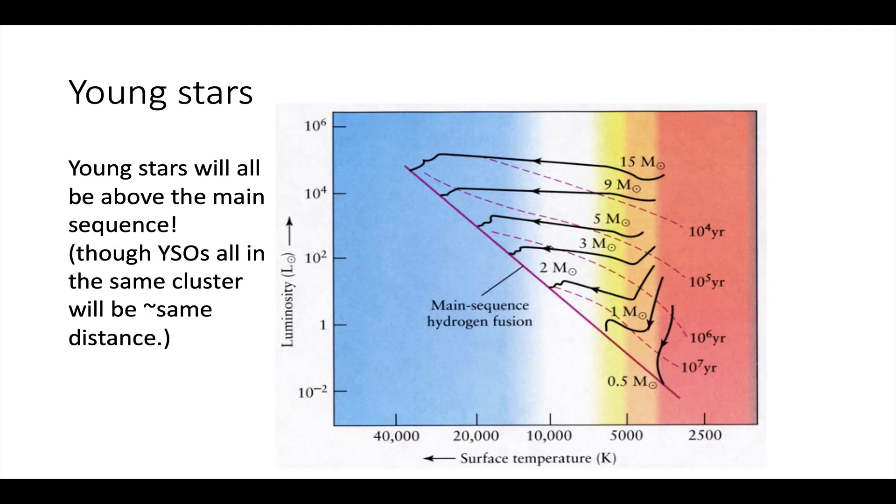Young stars are even more complicated. This is another picture from a textbook. You've got luminosity on the y-axis and temperature on the x-axis, just like for an HR diagram. But this time, what I'm plotting is a stylized view of young star evolution. If you approximate the main sequence by that line, you've got some lines of stars of constant mass.